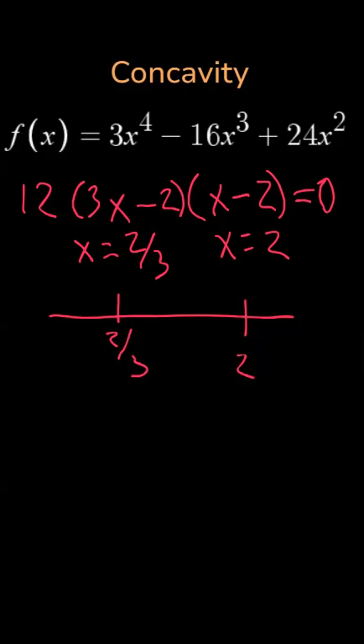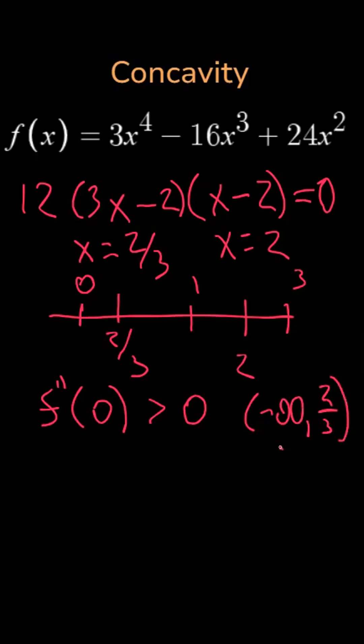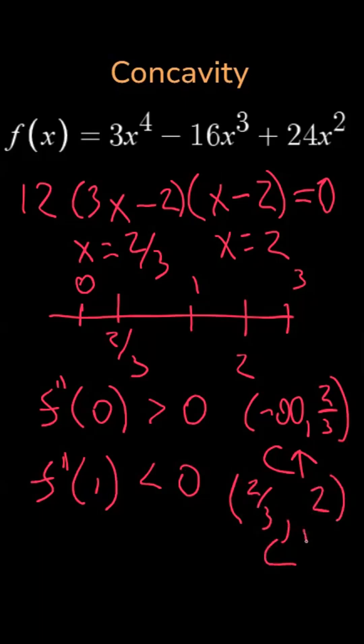And we test the value in the second derivative on either side of those values. The second derivative at zero is going to be positive, so that means before two thirds, the graph of f is concave up. The second derivative at one is negative, so that means on the interval two thirds to two, the graph is concave down.